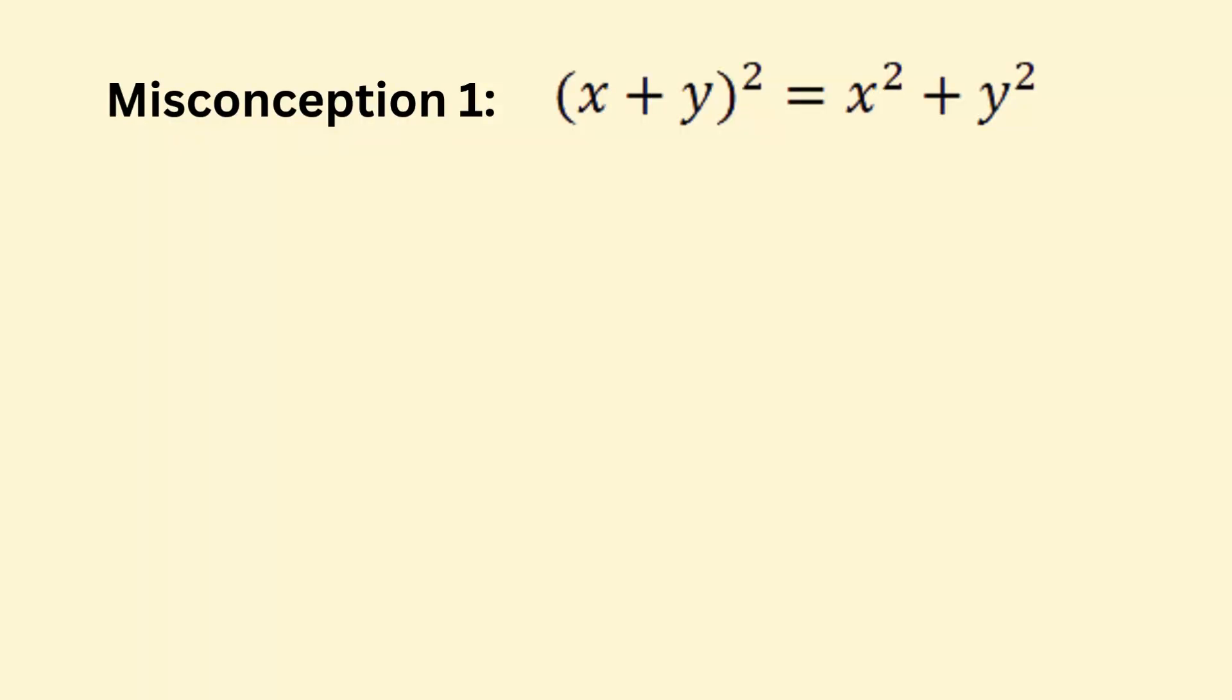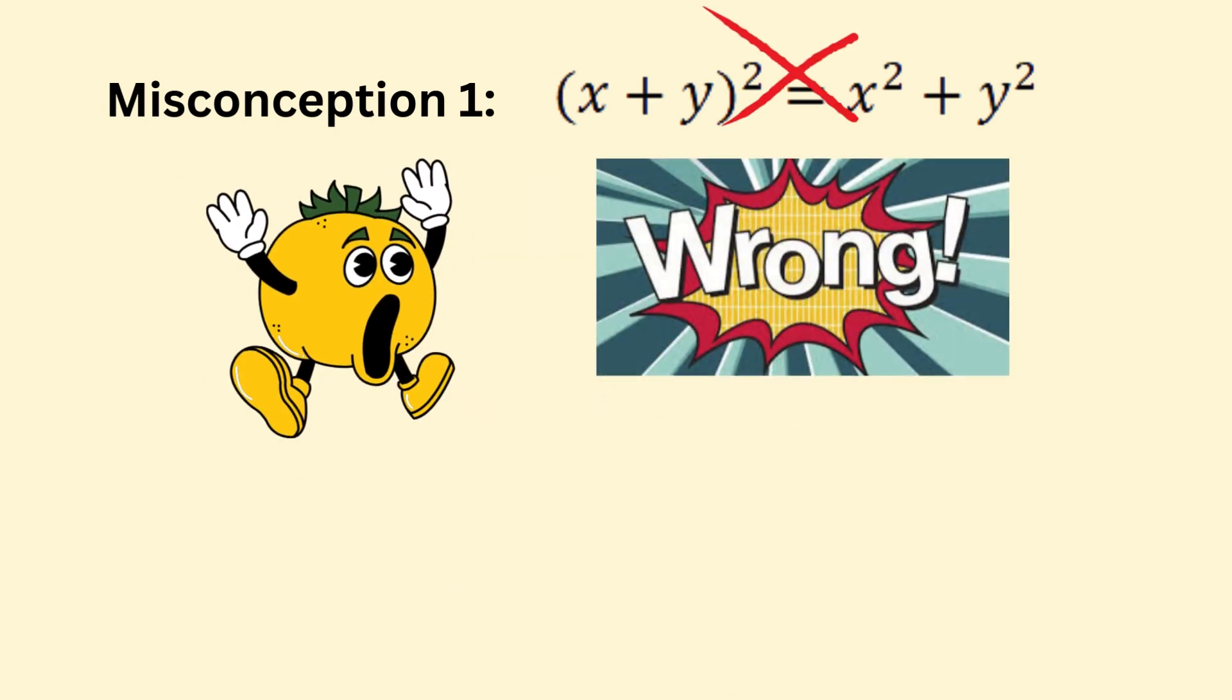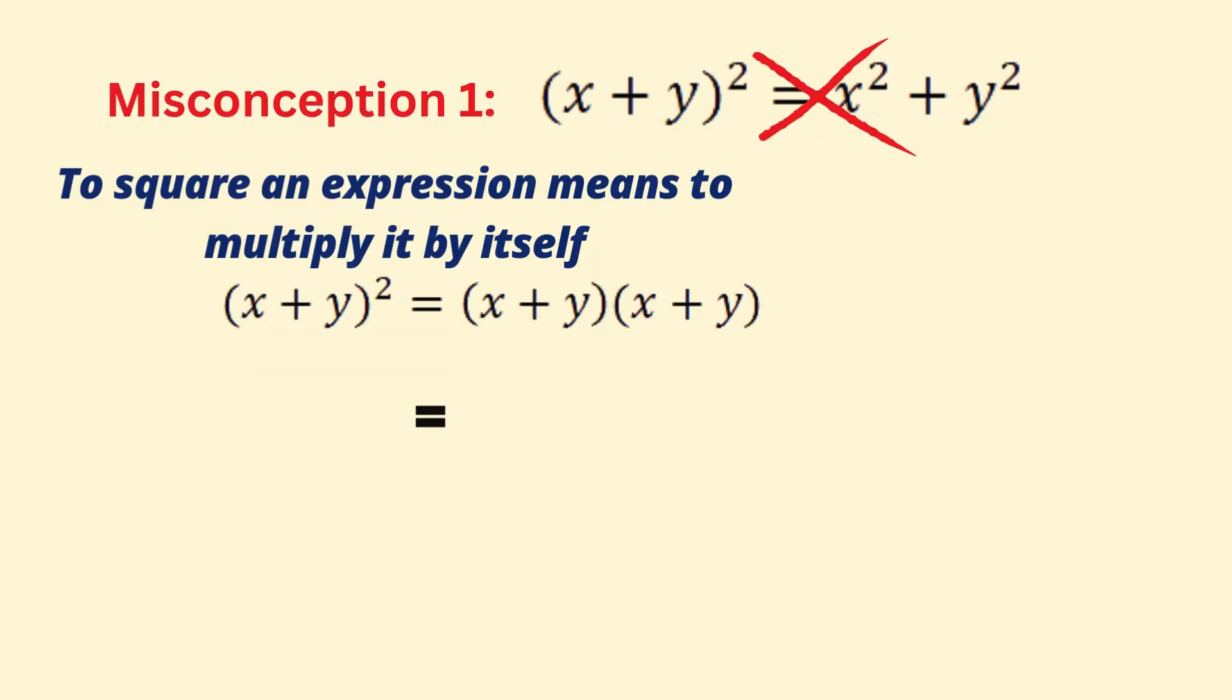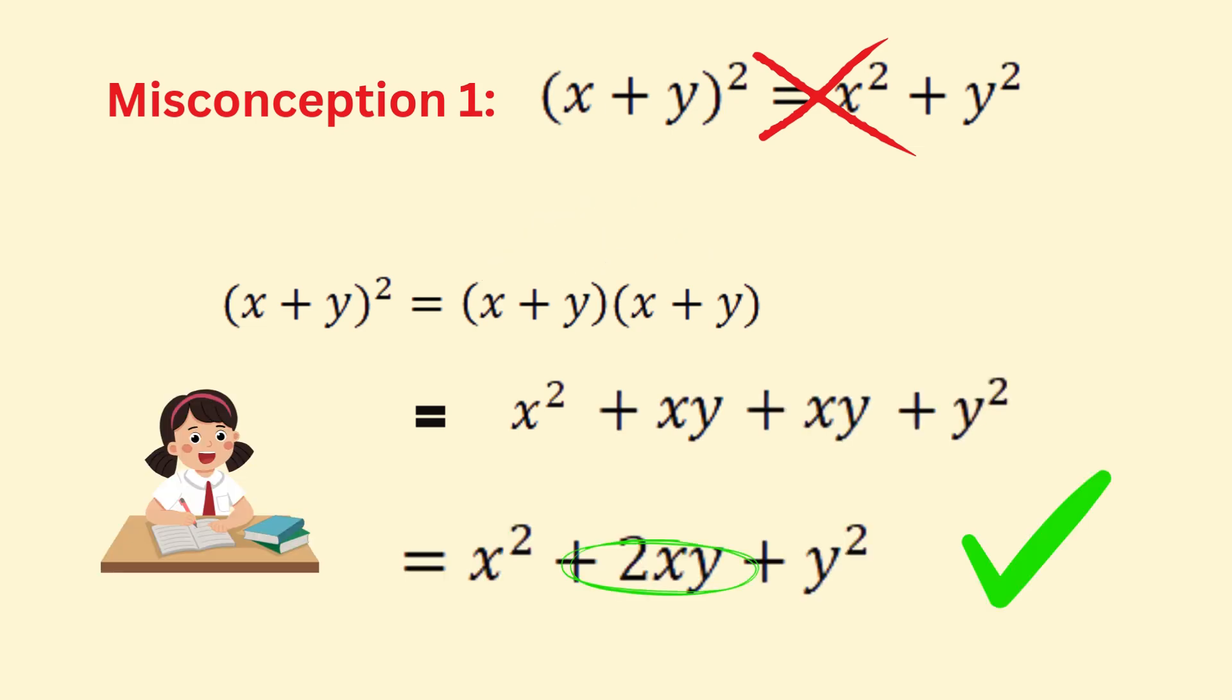A lot of students believe that when squaring a binomial you can simply square each term separately, but that's not the case. Remember, squaring means multiplying something by itself, so (x+y)² actually means (x+y)(x+y), which expands to x² + 2xy + y². Key tip: don't forget the middle term 2xy.